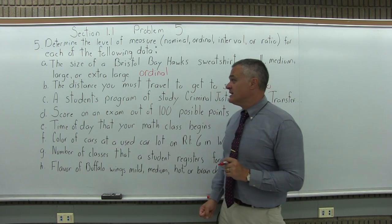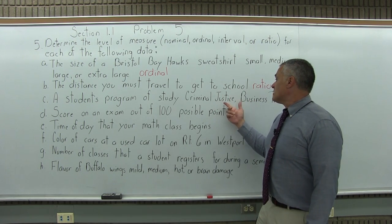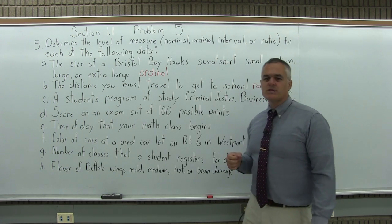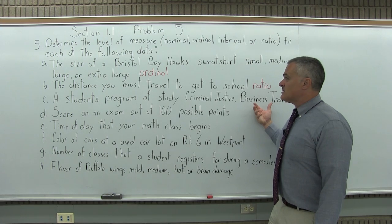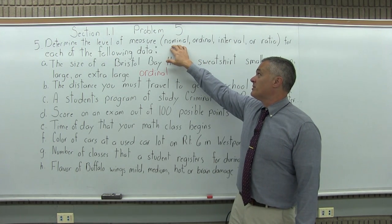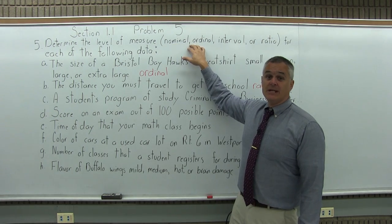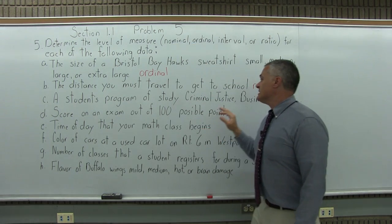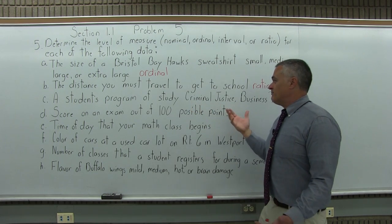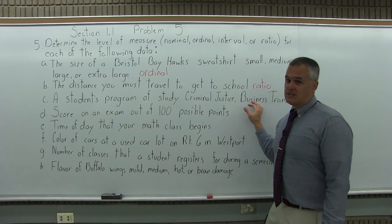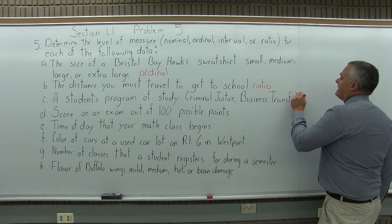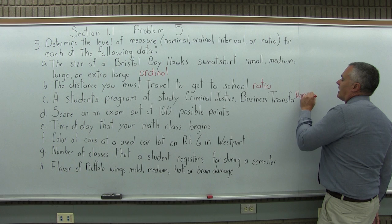The next one, C, a student's program of study. Criminal justice, business transfer, et cetera, like general studies. So these are names. So it's going to be one of the first two, either nominal or ordinal. Again, nominal being name only with no implied rank, ordinal being name with an implied rank. Well, these are names, but there is no rank implied. Like, is nursing more or less of anything than, say, business transfer? No, it's just a different program. So this would be nominal, name only with no implied rank.